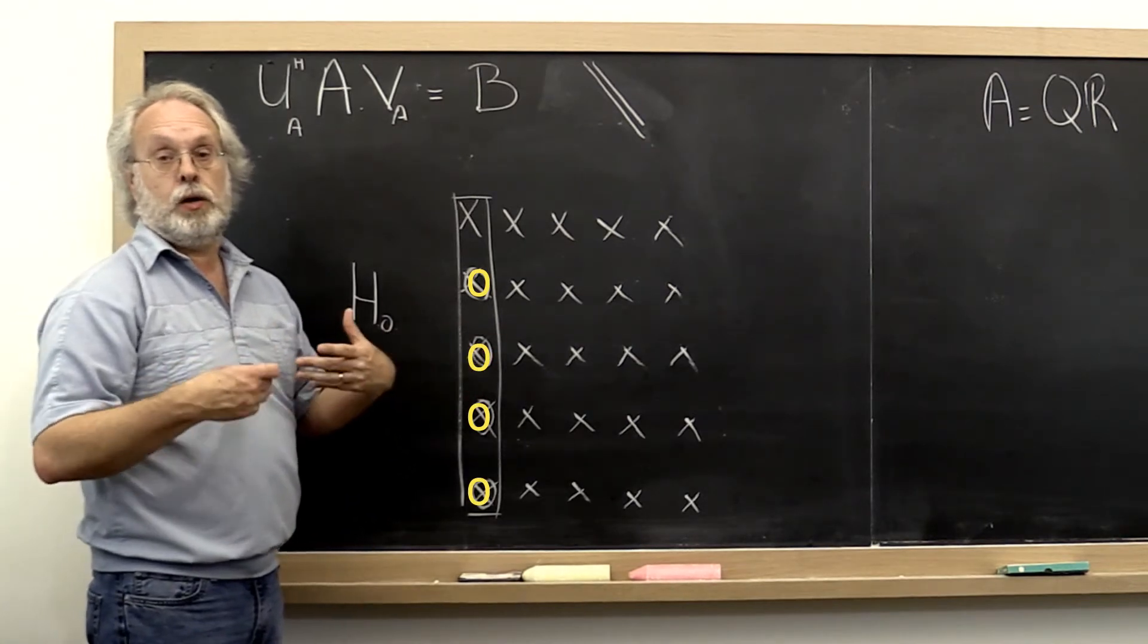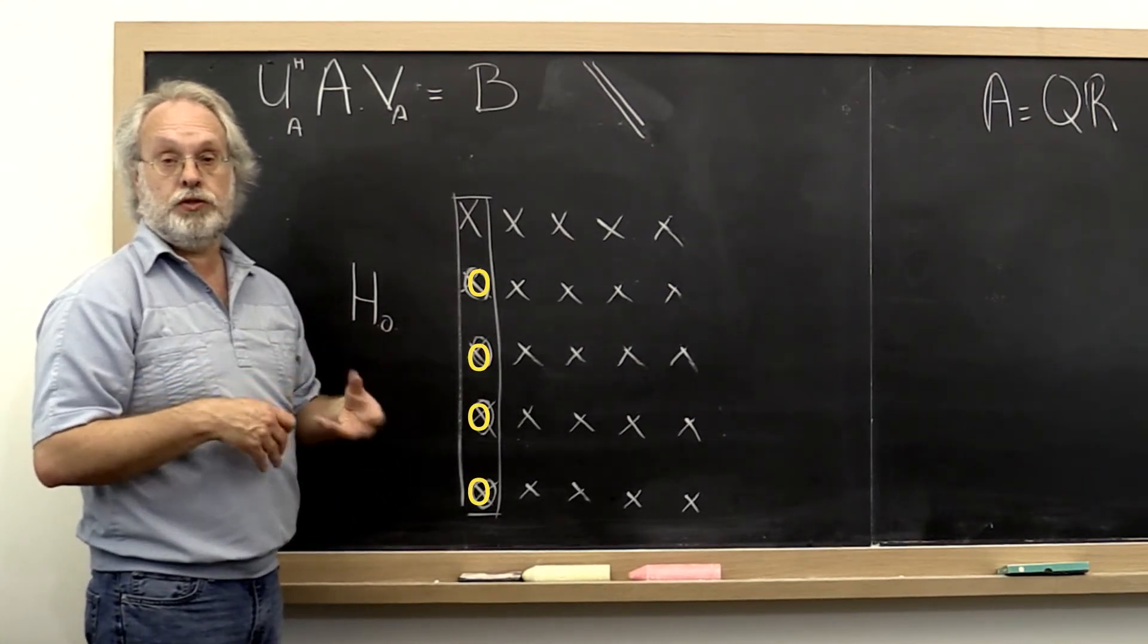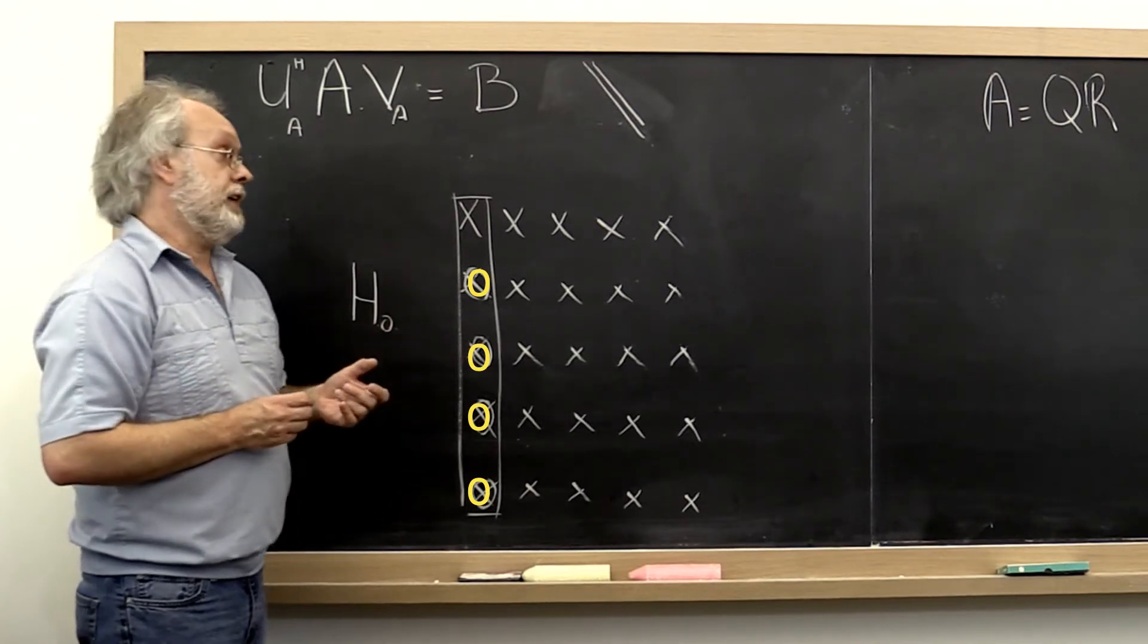We saw that already when we talked about using Householder transformations to compute the QR factorization.